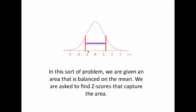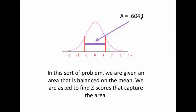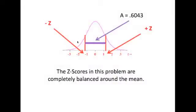We need to find the Z-scores that capture that area. For our specific problem, we will use an area equal to 0.6043, which is centered upon the mean, and we will look for the Z-scores that trap that area. The respective Z-scores of interest to us will be a negative Z-score and a positive Z-score, which trap an area equal to 0.6043.